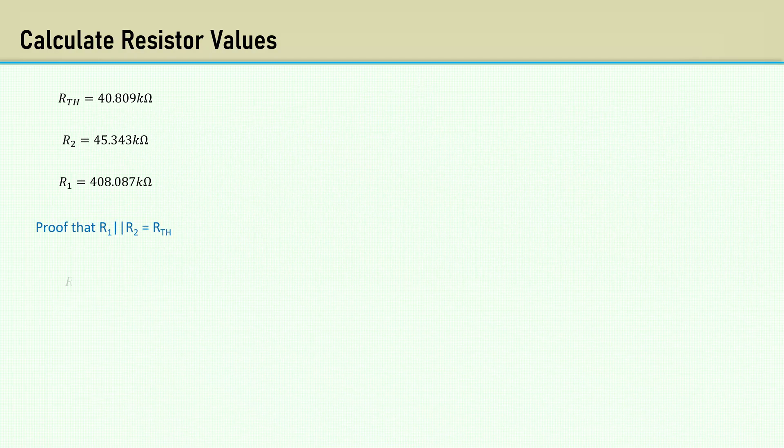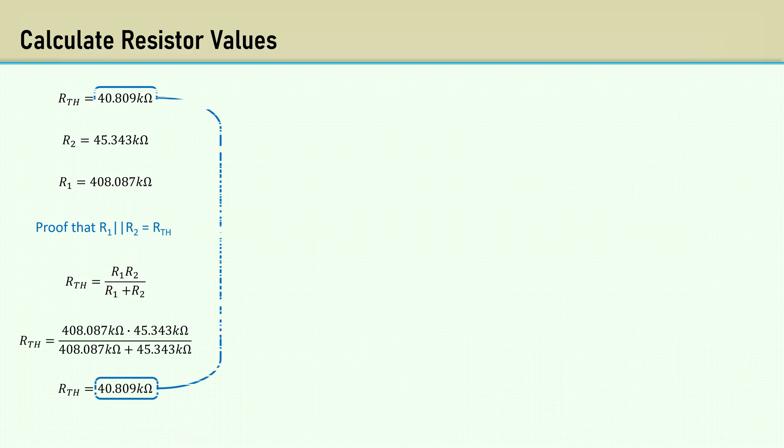Let's take a minute and prove that R1 in parallel with R2 is correct, and of course it is. The closest E96 resistor values are 45.3 K and 412 K.